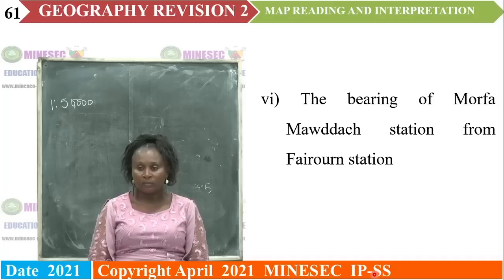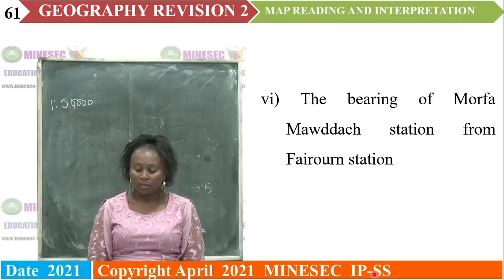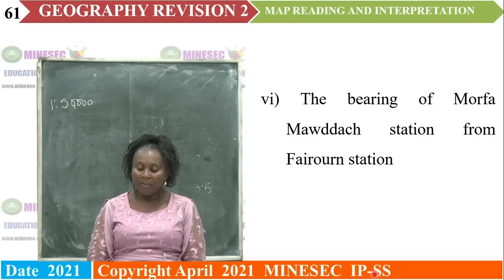The next question: the bearing of Morfa watchpoint from Fairbourne Station. For bearings, use your protractor and identify the point of origin — our point of origin is Fairbourne Station. Then you get the bearing, the angle of Morfa from Fairbourne. That angle is 45 degrees.